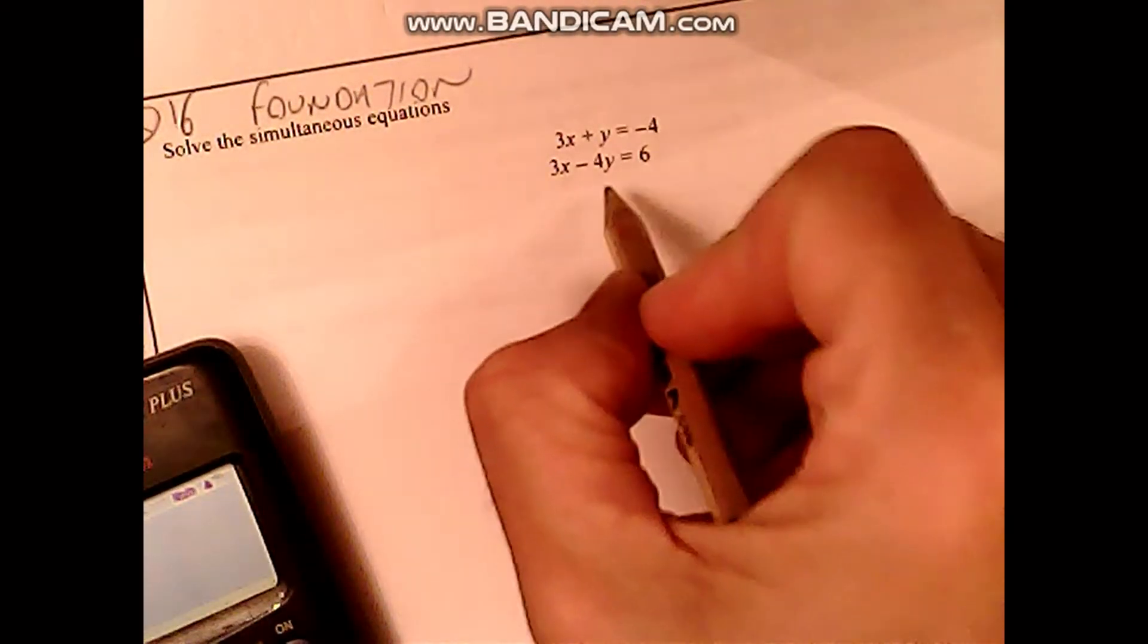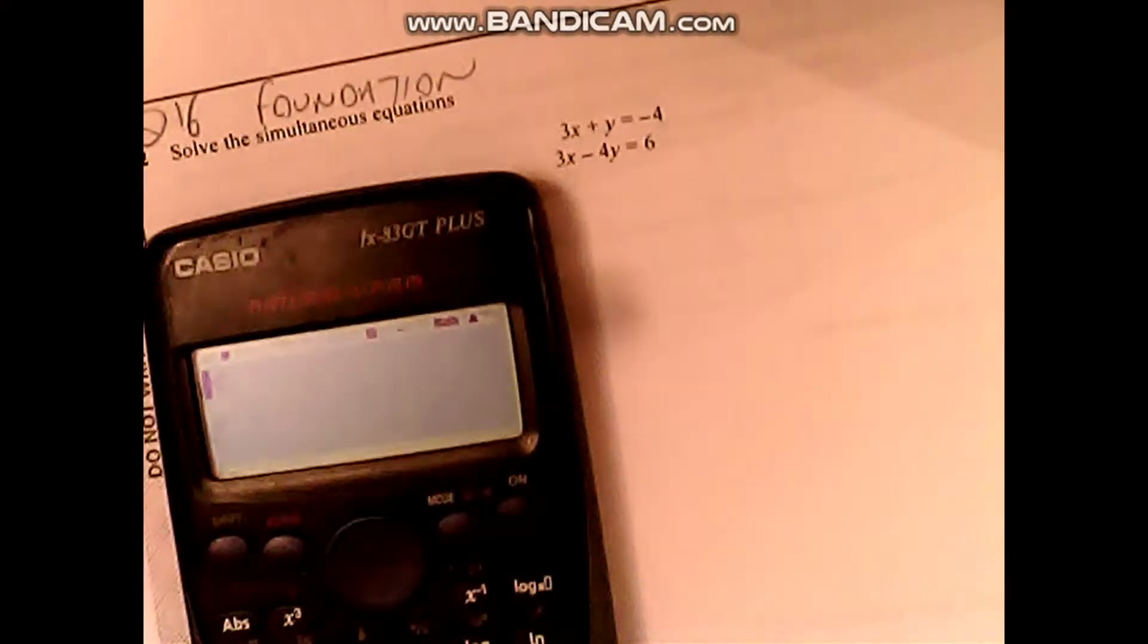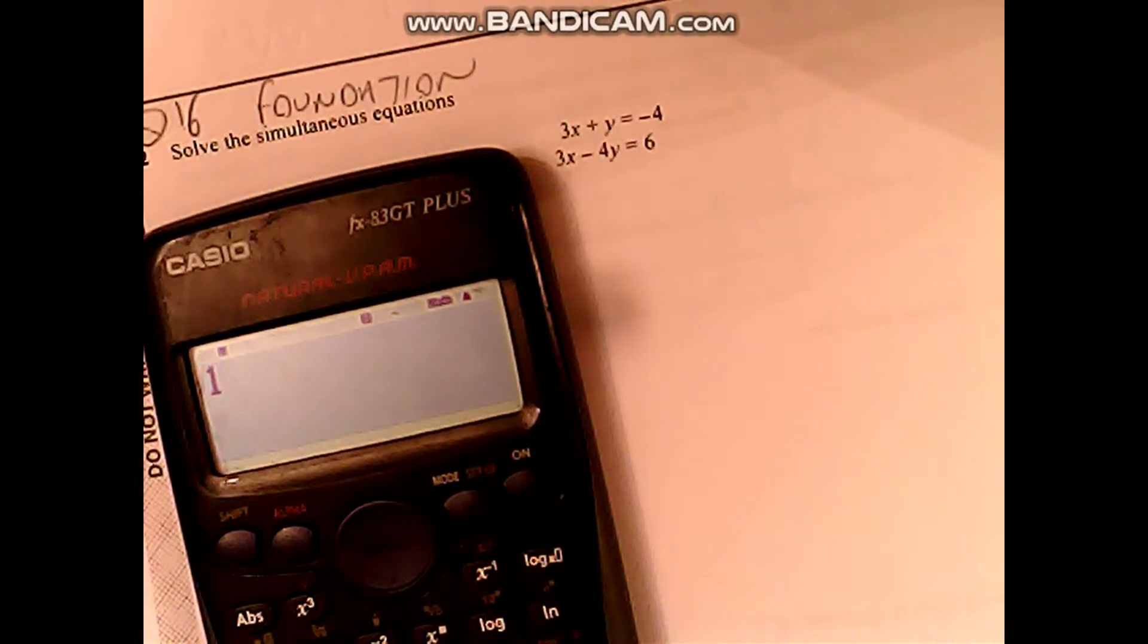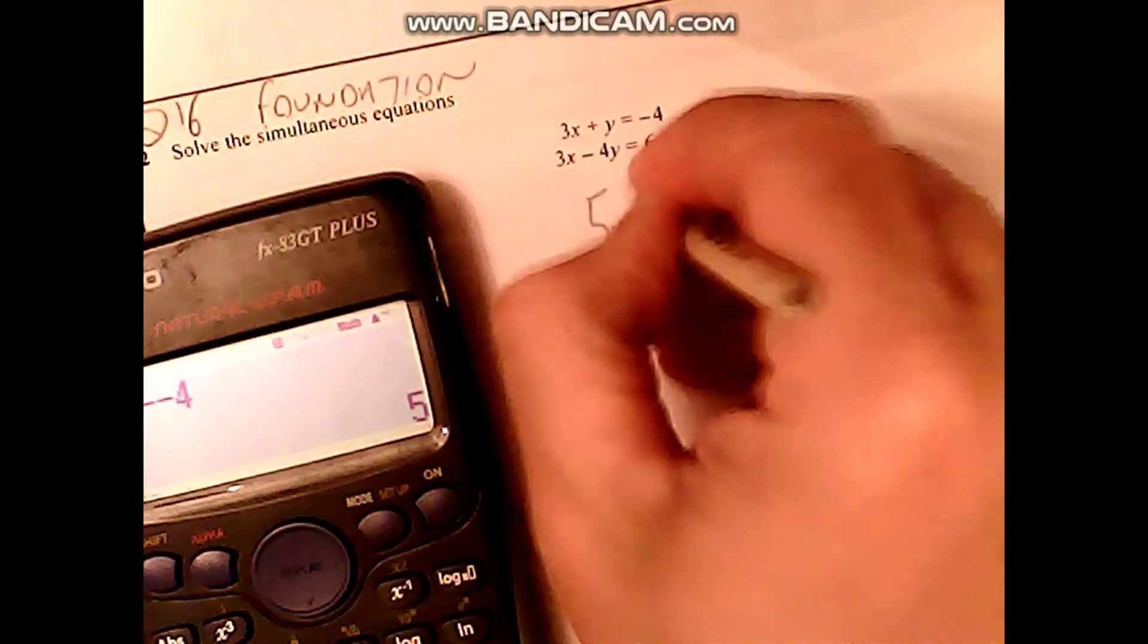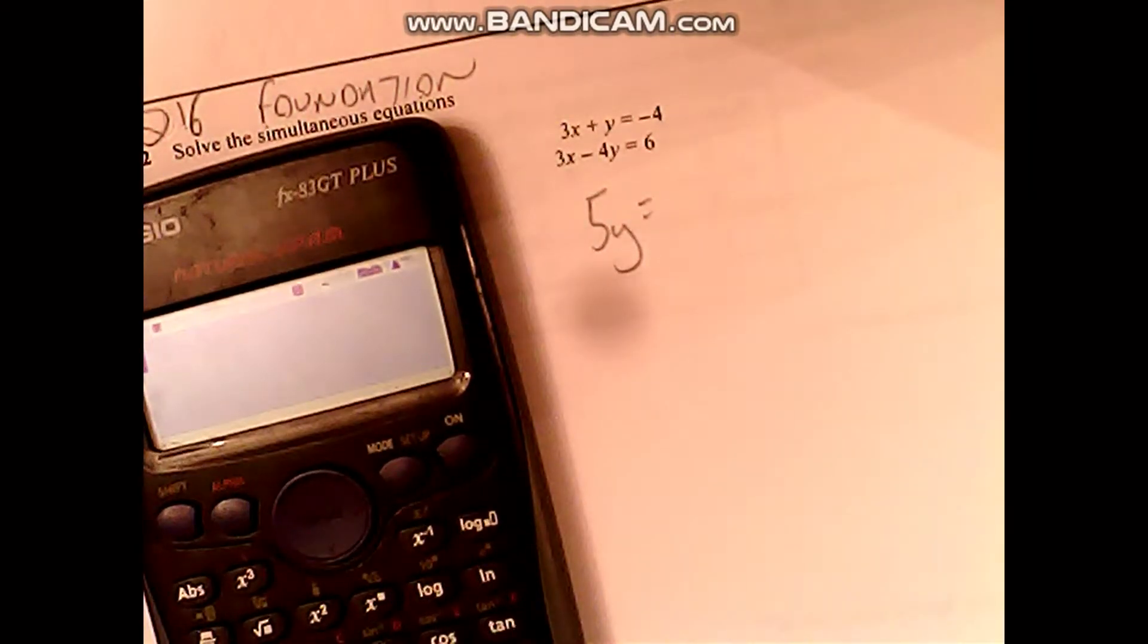So that's 1y minus negative 4y. Negative numbers confuse a lot of people, so I'm just going to do 1 minus minus 4, which is 5. That means I've got 5y. And I'm going to put minus 4 minus 6, because remember, taking the top away from the bottom, which is minus 10.